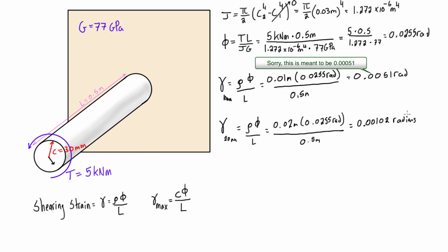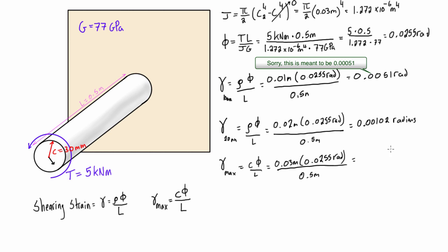Now if we want the shearing strain right at the surface — 30 millimeters away — this is actually our maximum because rho equals c, the maximum radius. So we have c times the angle of twist over L: 0.03 meters times 0.0255 radians divided by 0.5 meters, which gives a maximum shearing strain of 0.00153 radians.